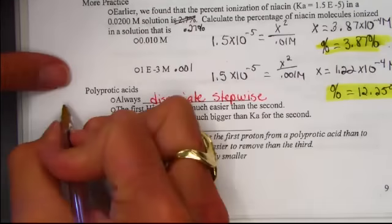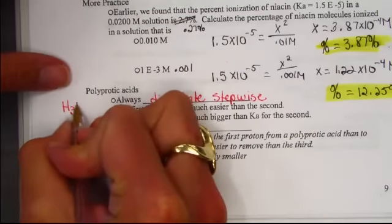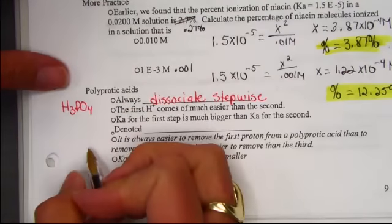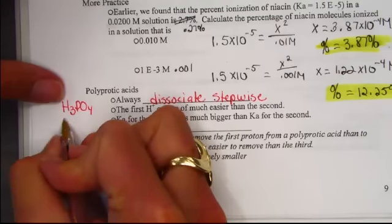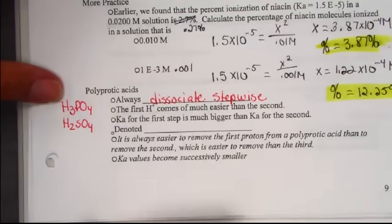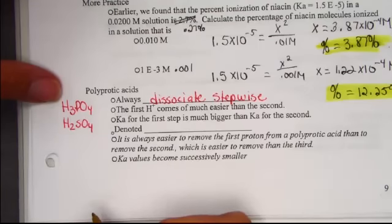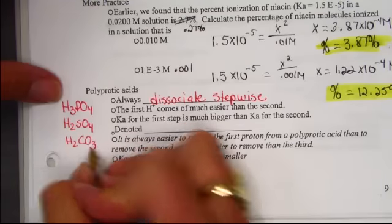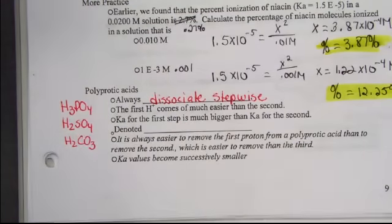A polyprotic acid, for example, phosphoric acid H3PO4, is called a triprotic acid. Sulfuric acid is a polyprotic acid. It contains two acidic hydrogens, also known as a diprotic acid. Carbonic acid would be a diprotic acid. Each one of those protons comes off in a stepwise fashion.